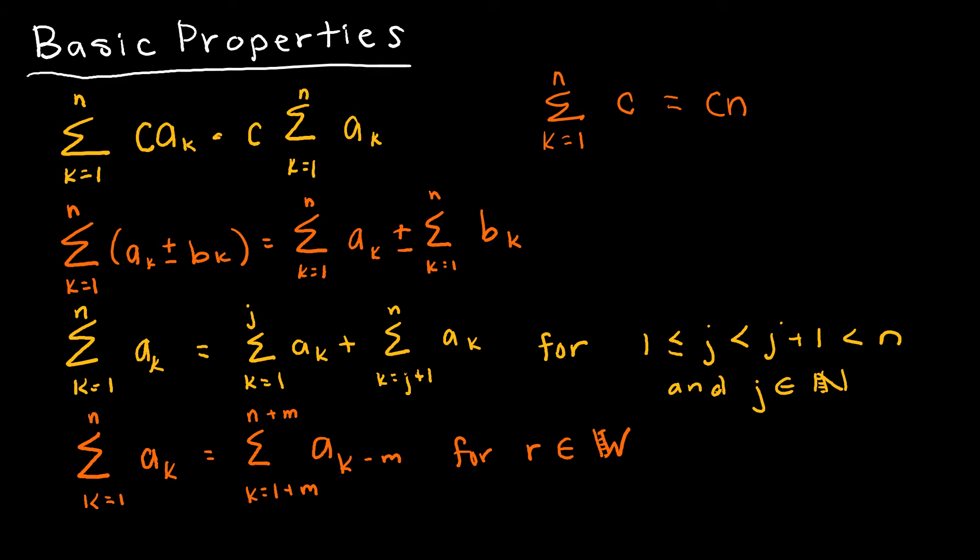Let's start by going through some basic properties with summations that you should be aware of. A lot of these are things that you may have seen before, say when dealing with derivatives and integrals. For instance, if I have some constant multiplied by a value that is dependent on k, it's okay for me to take that constant and move it to the outside. Just as I would with an integral, I can take that constant to the outside, then evaluate the sum, and then multiply that sum by the constant.